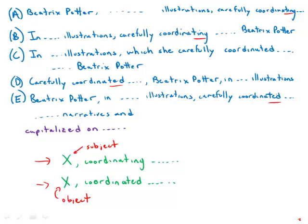And so in both a and b, we have illustrations carefully coordinating. And that's illogical because the illustrations are not doing the coordinating. Beatrix Potter is doing the coordinating. So a and b are not correct.